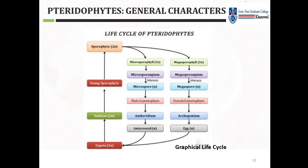Separate and independent gametophytic and sporophytic generations are present. Looking at the life cycle diagram, starting from the zygote: zygote forms an embryo, embryo forms a young sporophyte, and young sporophyte becomes a mature sporophyte. The sporophyte has microsporophylls and megasporophylls producing microsporangia and megasporangia respectively. After meiosis, microspores and megaspores are formed, which produce male and female gametophytes bearing antheridia and archegonia. Antherozoids and eggs fuse to complete the cycle, demonstrating alternation between sporophytic and gametophytic generations.